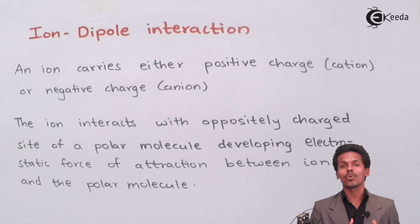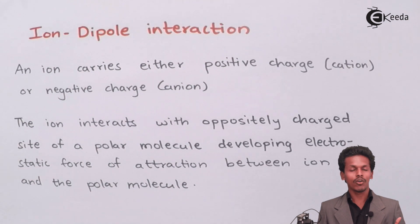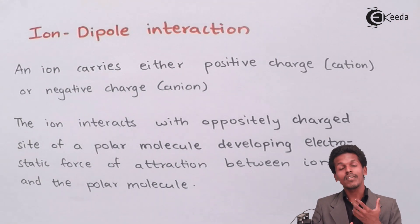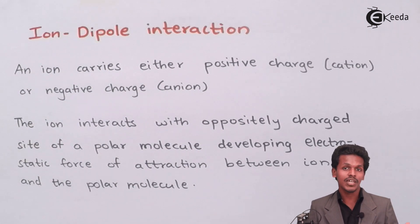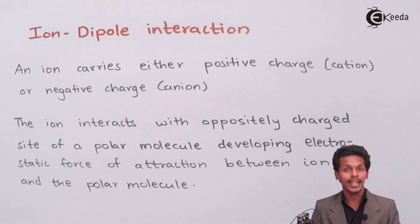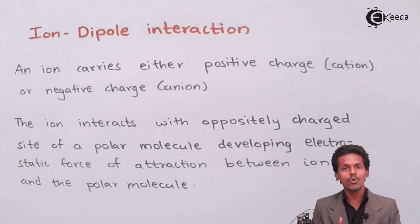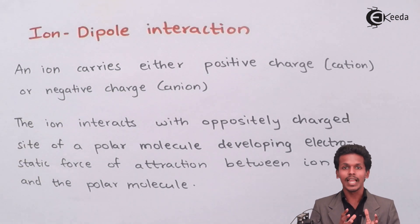Suppose NaCl is being dissolved in water — when dissolved, they separate into Na⁺ (cation) and Cl⁻ (anion). In solid form both carry partial charges, but upon dissociation Na becomes fully positive and Cl fully negative. Water is a polar molecule where H has a positive charge and O has a negative charge. So Na⁺ interacts with the oxygen (negative end) of water.